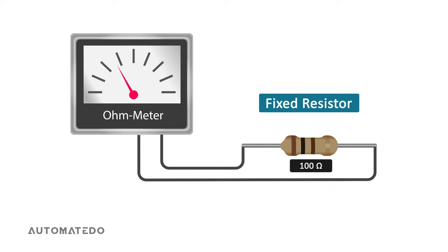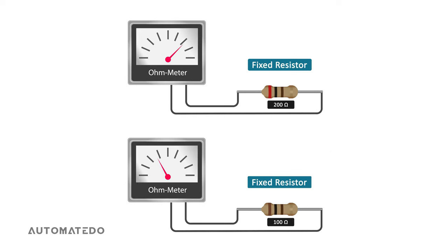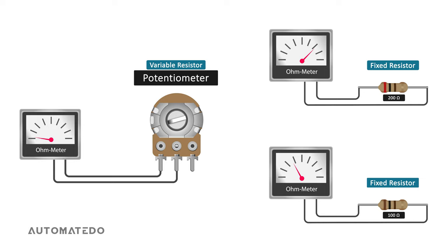Imagine we have a 100 ohm fixed resistor. If for any reason we decide to change the resistance, for example to 200 ohms, we have to change the resistor itself. We need to get a new value resistor and that's where a potentiometer comes in useful.